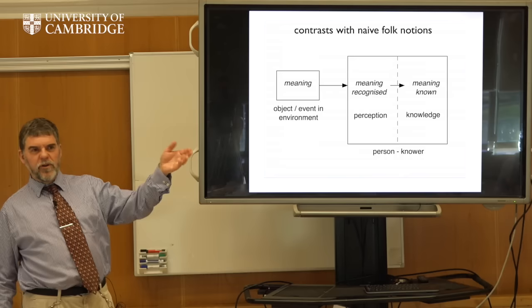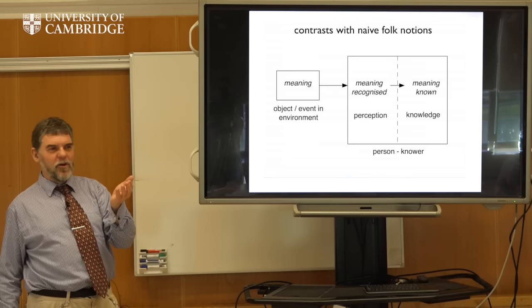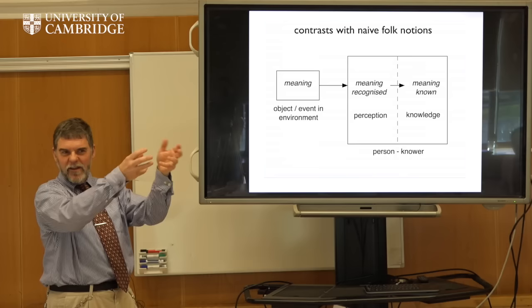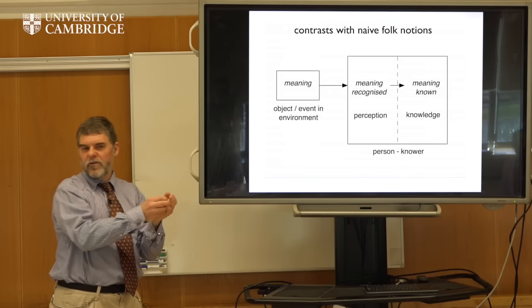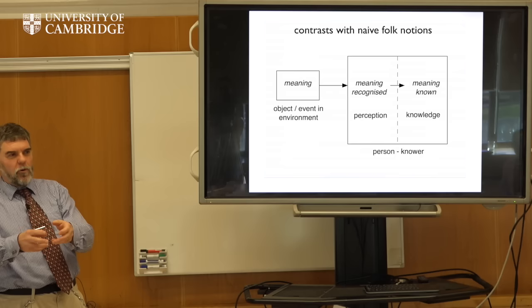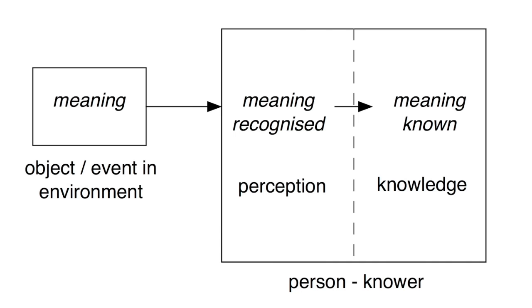We kind of implicitly think that there are things in the environment that have meaning attached to them, and what we do as people with minds is recognise that meaning and come to know things. But that's rather naive, because mostly what we're doing is imposing meanings on things. If you see a large rock when you're out walking and tired and decide to use it as a seat, you've conceptualised that as a seat — but it's not inherently a seat. As human beings, we create meanings for things. Sometimes the meaning we're imposing is aligned with the meaning other people are imposing, and sometimes the meaning we're imposing is aligned with the meaning somebody else intends us to impose — hopefully when you're reading a textbook or listening to a lecture — but it doesn't always happen.